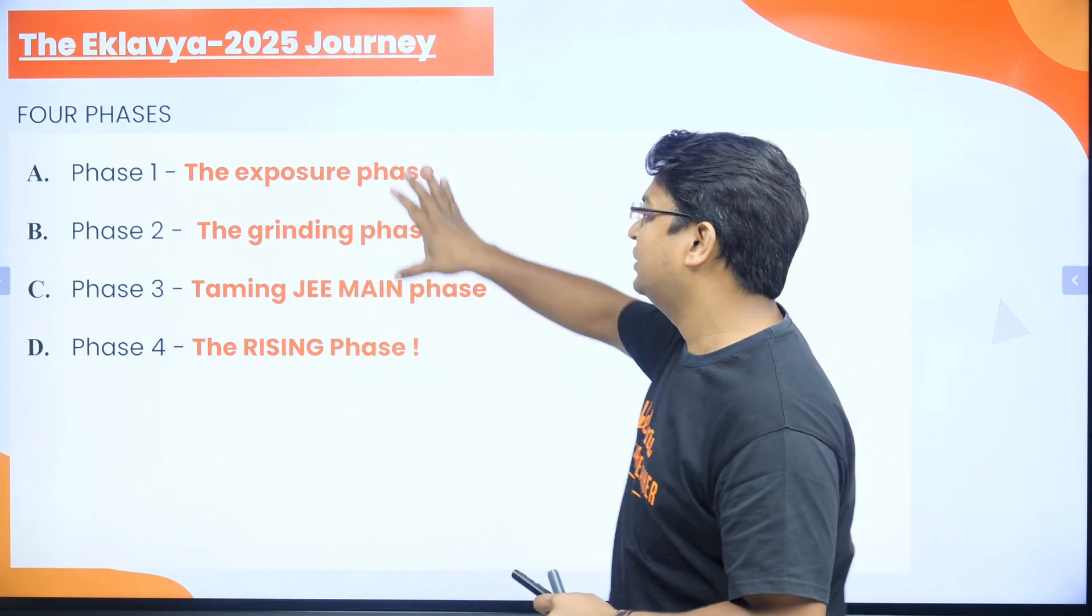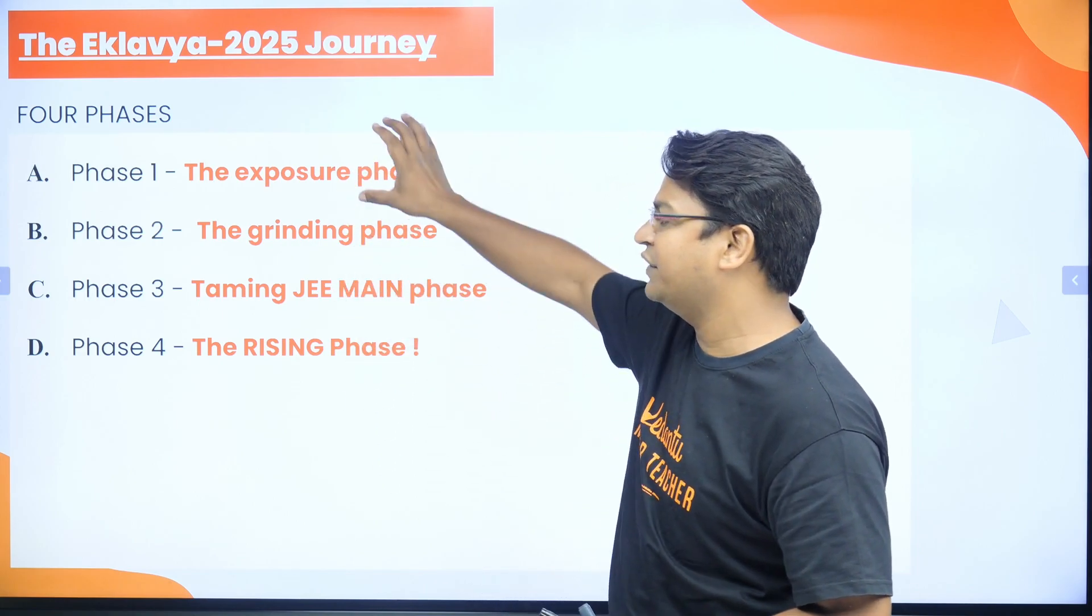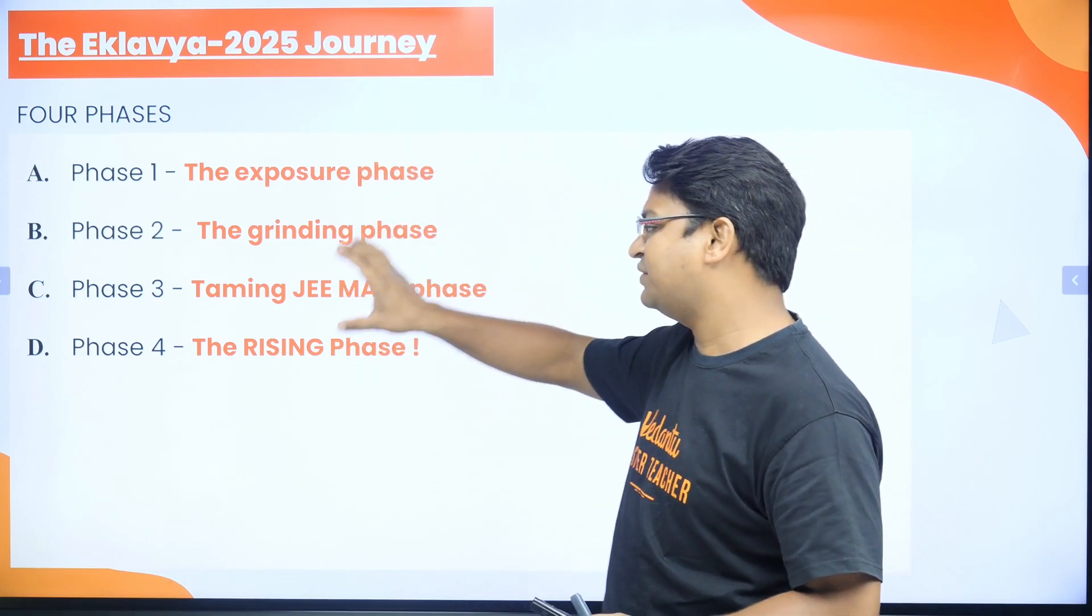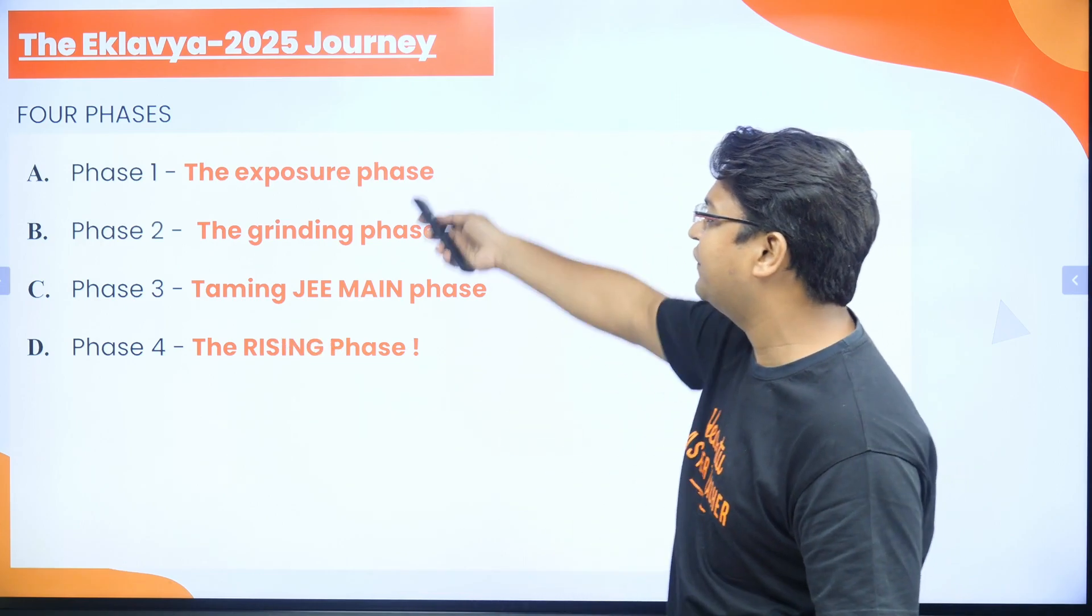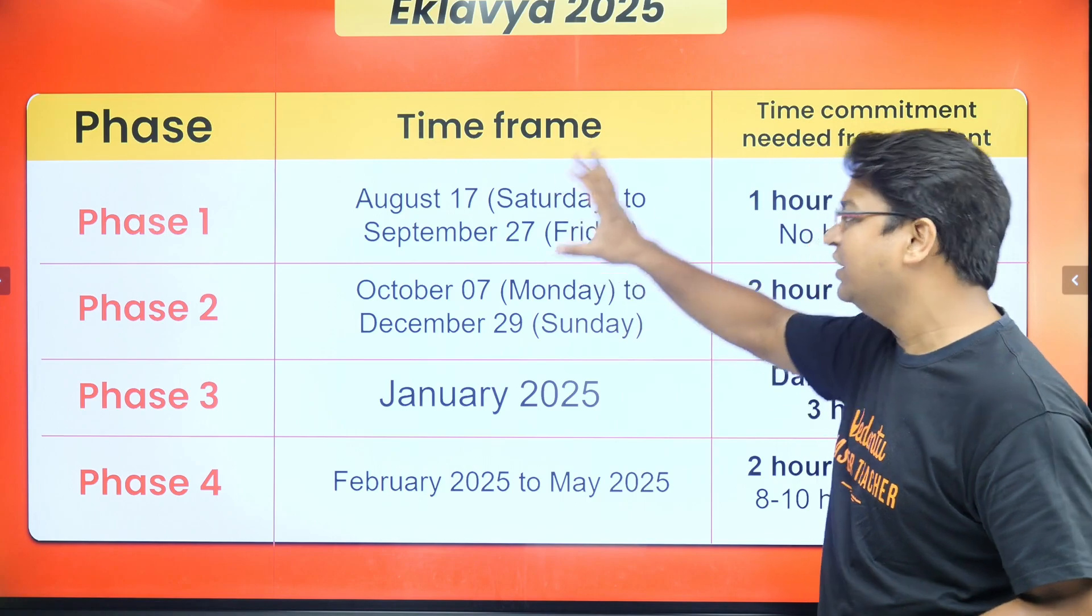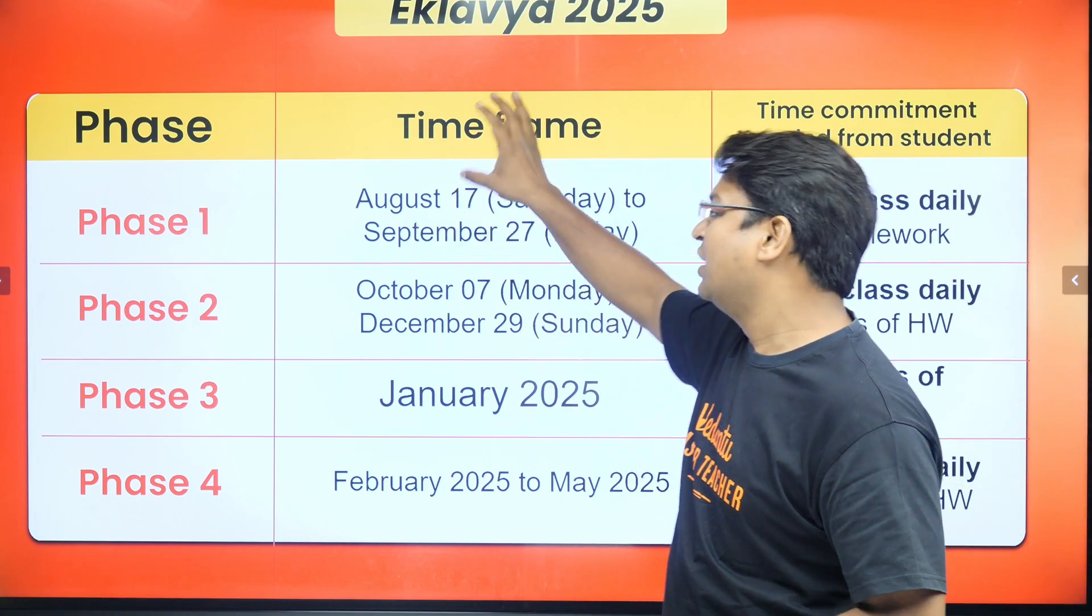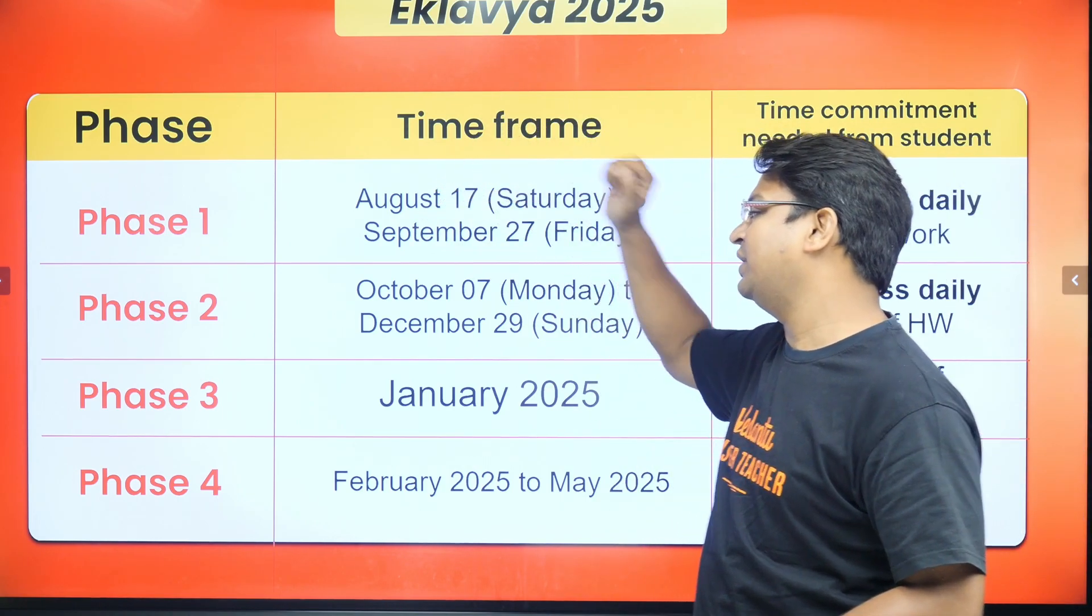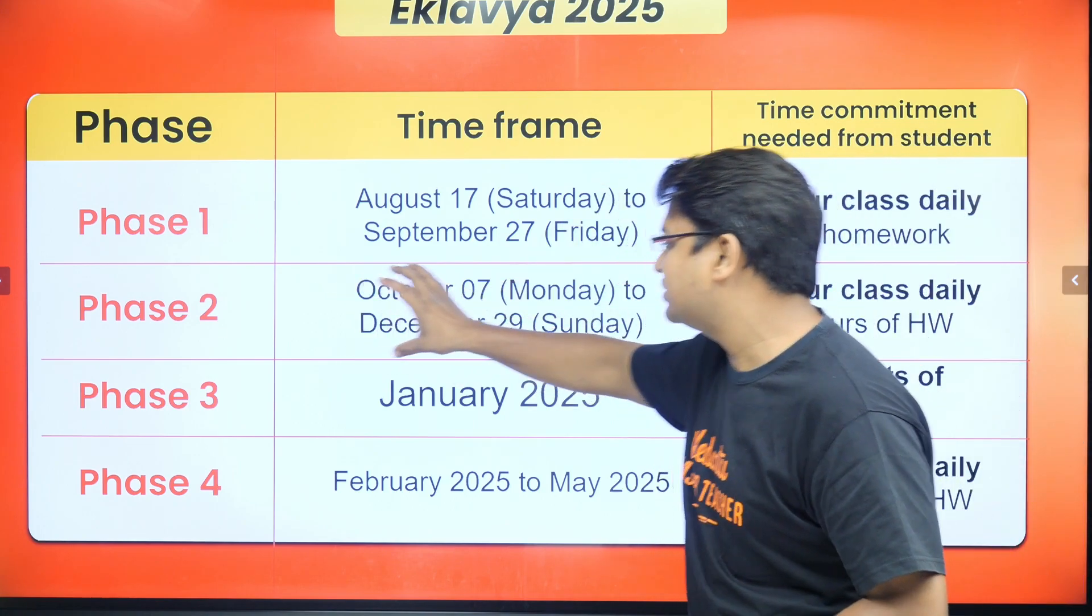There are four phases: Phase 1 is the exposure phase, Phase 2 is the grinding phase, Phase 3 is taming JEE Mains phase, and Phase 4 is the rising phase. We are done with Phase 1, which was from August 17th to September 27th, and Phase 2 commences from October 7th.